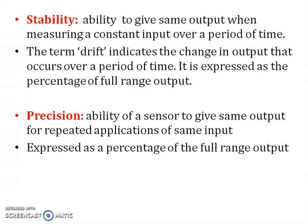Stability is the ability to give the same output when measuring a constant input over a period of time. The term drift indicates the change in the output that occurs over a period of time. It is expressed as a percentage of full range output. Precision is the ability of a sensor to give the same output for repeated applications of the same input. It is expressed as a percentage of the full range output.